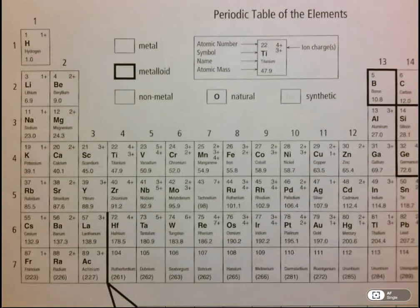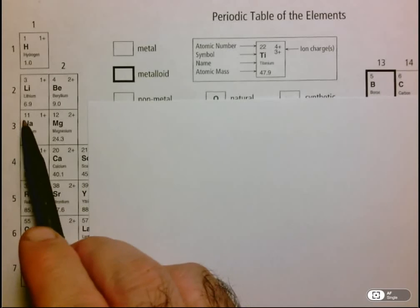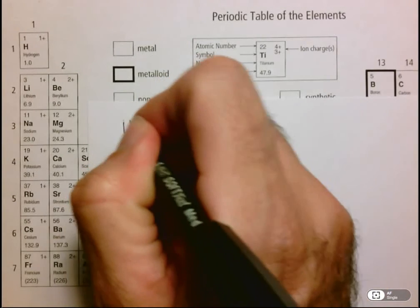Let's take a look at the information that we need in order to draw our Bohr-Rutherford diagram. What we need are the number of protons, electrons, and neutrons.